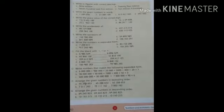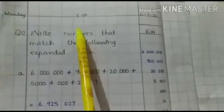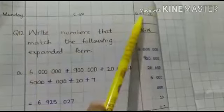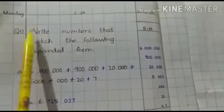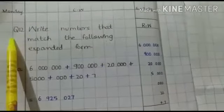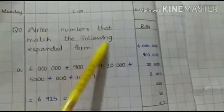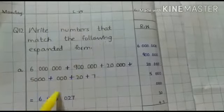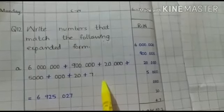Questions 13 and 14 which are on page number 7. You have to write classwork, day and date at the top of the page. So come to the question, question 12: write numbers that match the following expanded form.